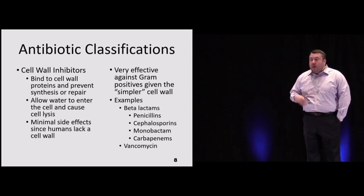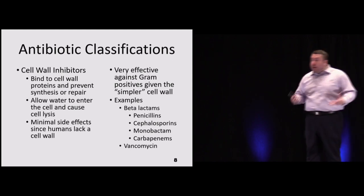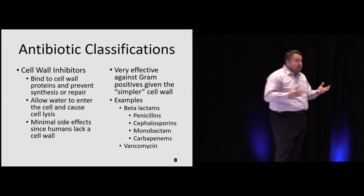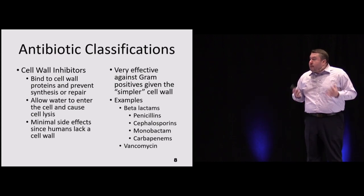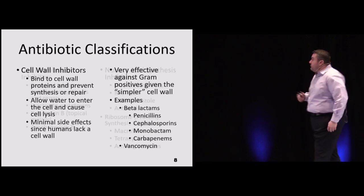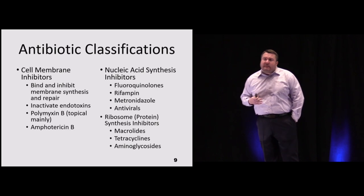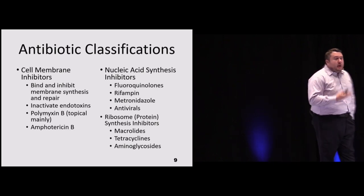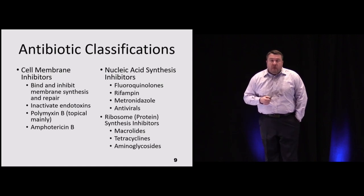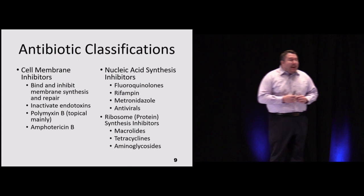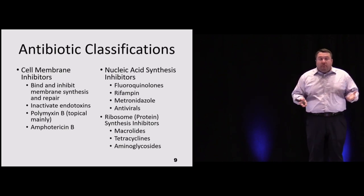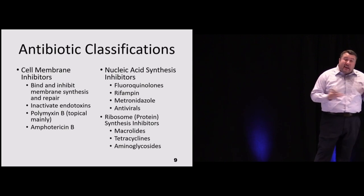Antibiotics work via five mechanisms. Cell wall inhibitors include beta-lactams: penicillins, cephalosporins, carbapenems, and the one monobactam. Glycopeptides like vancomycin also affect the cell wall but are not beta-lactams. Cell membrane inhibitors — a small class including polymyxin and amphotericin B — are used less often. Nucleic acid synthesis inhibitors include quinolones and rifampin; most antivirals fall here too. We'll come back to quinolones and their bad press — the longer we've used them, the more adverse effects we've discovered.